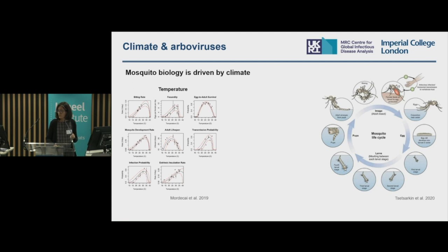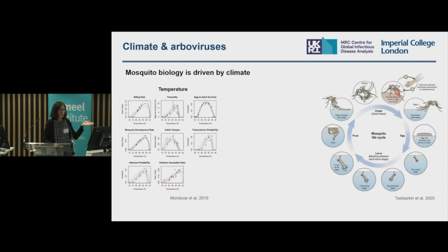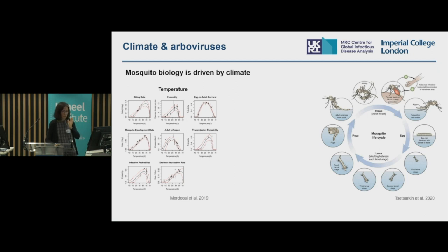Mosquitoes are ectotherms, meaning they cannot regulate their body temperature. Therefore, all the stages in mosquito development are affected by temperature — from the moment mosquitoes lay eggs in water, to when those eggs develop into larvae and pupae, to when the mosquito emerges as an adult. All these stages are driven by the temperature of where these mosquitoes live. There is an optimal temperature for all these traits, including adult lifespan, biting rates, and the rate at which mosquitoes develop. There is also a specific range outside which these mosquitoes cannot live.